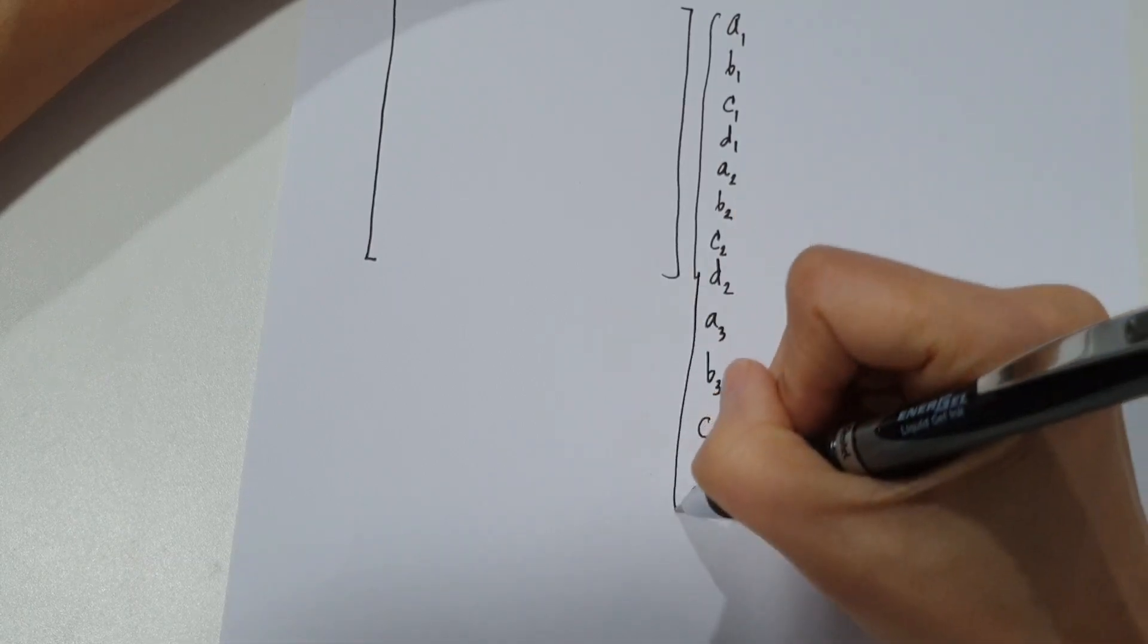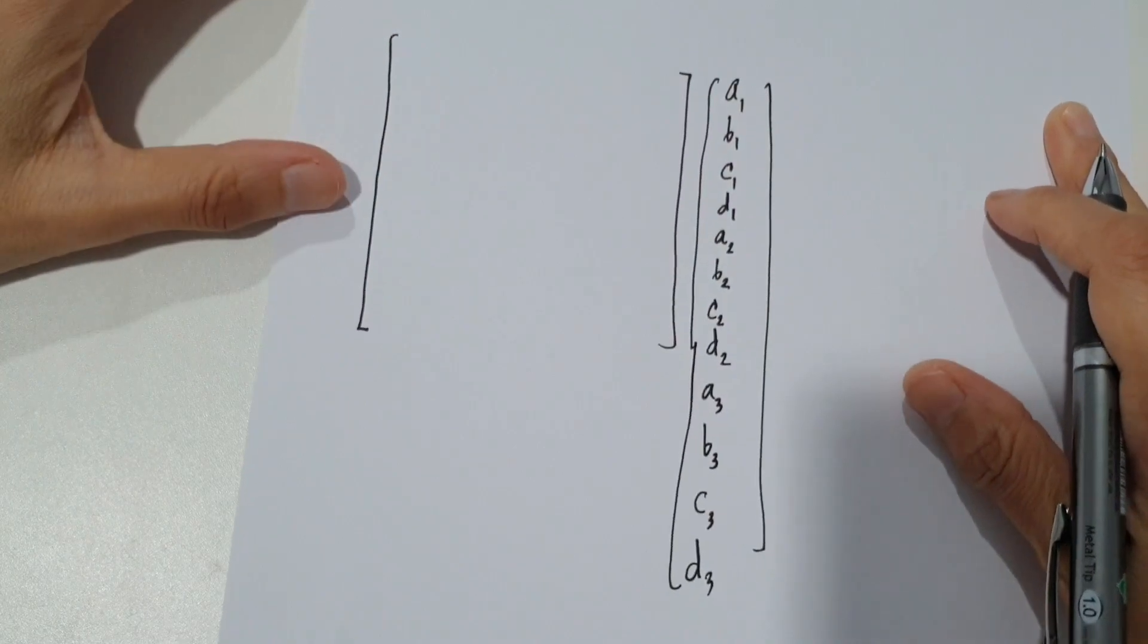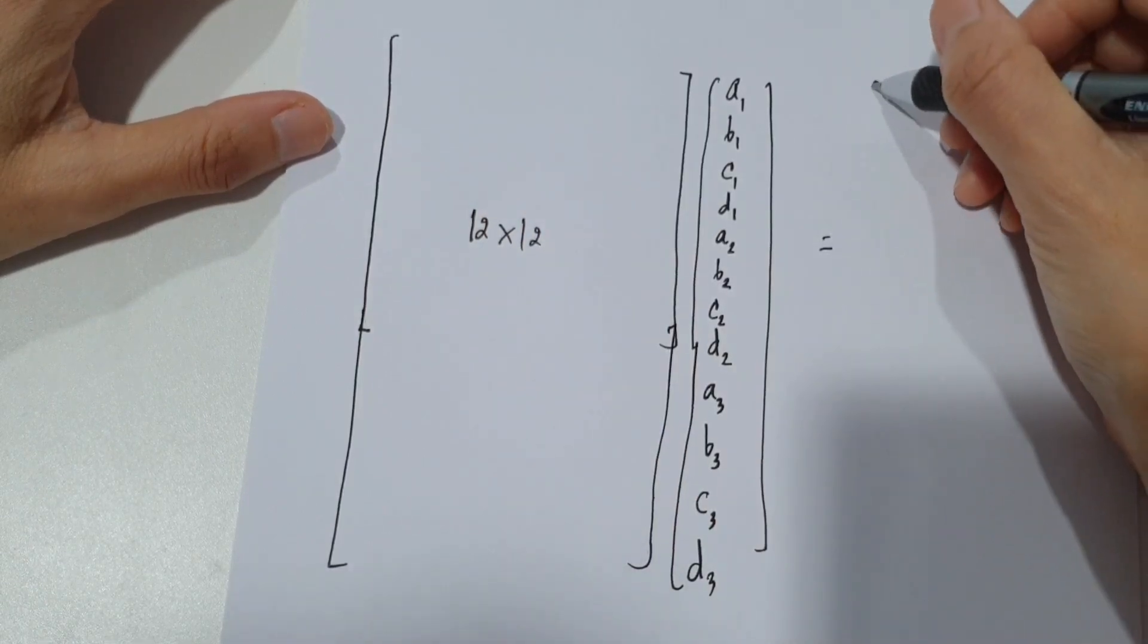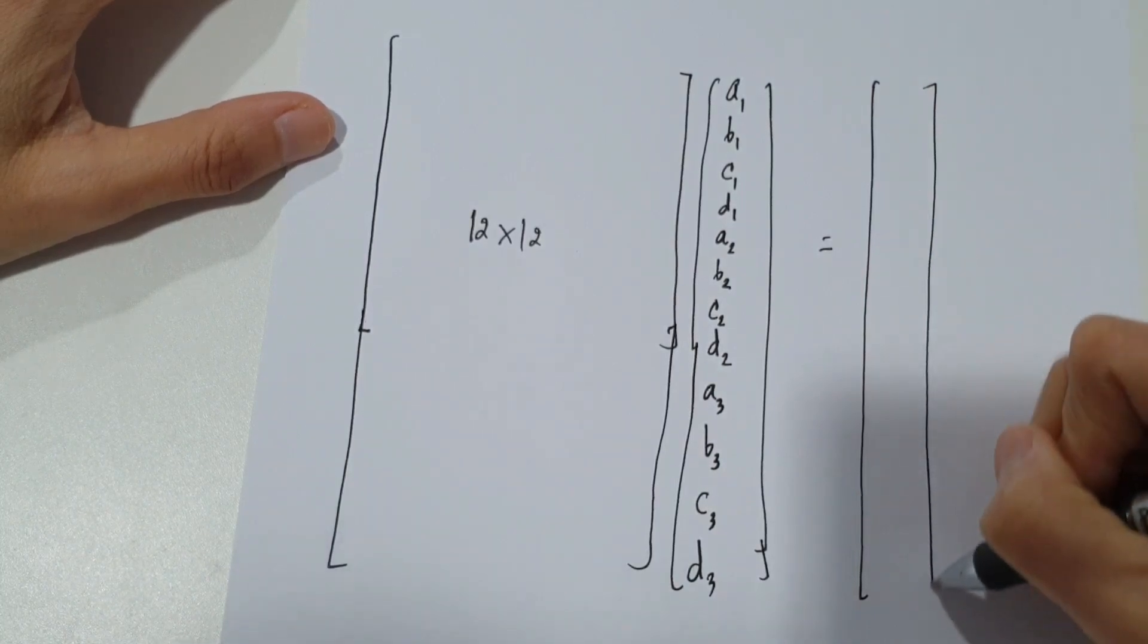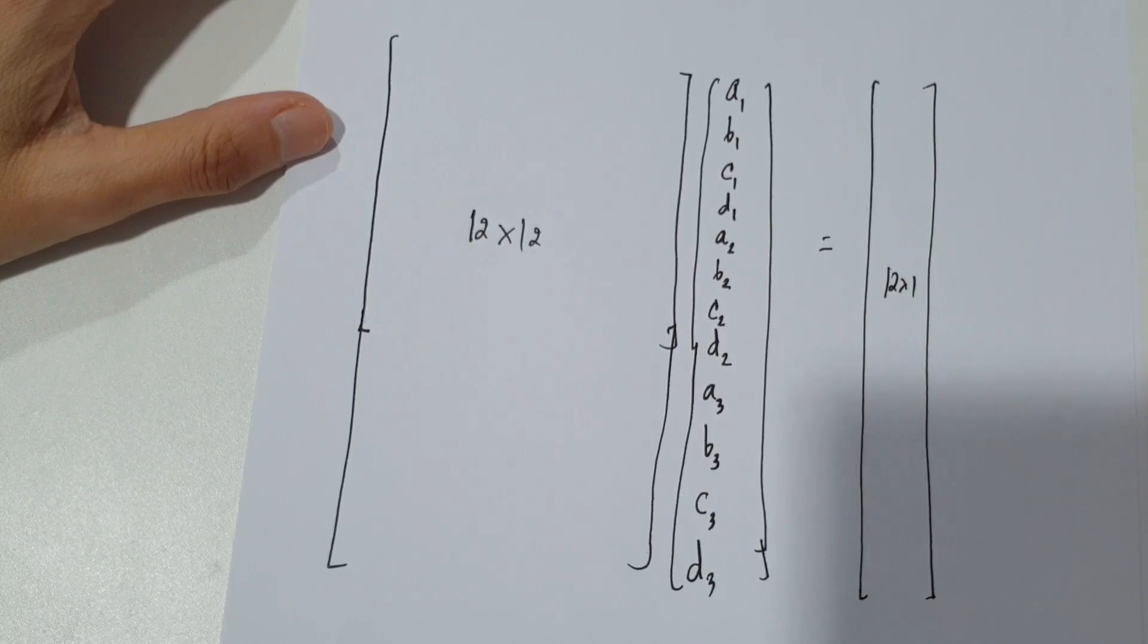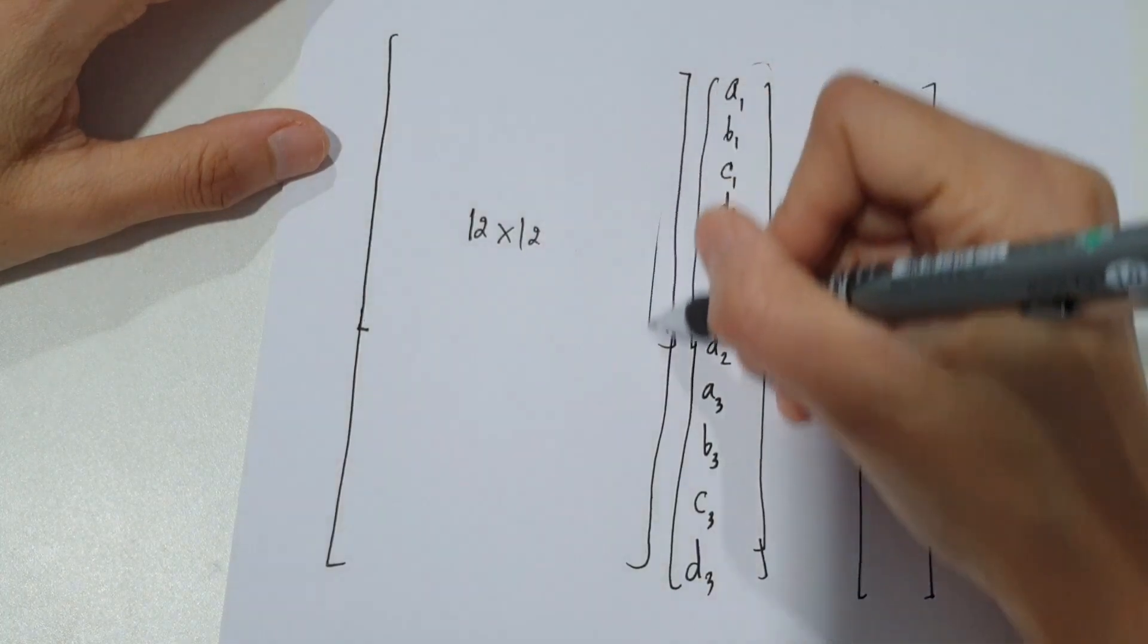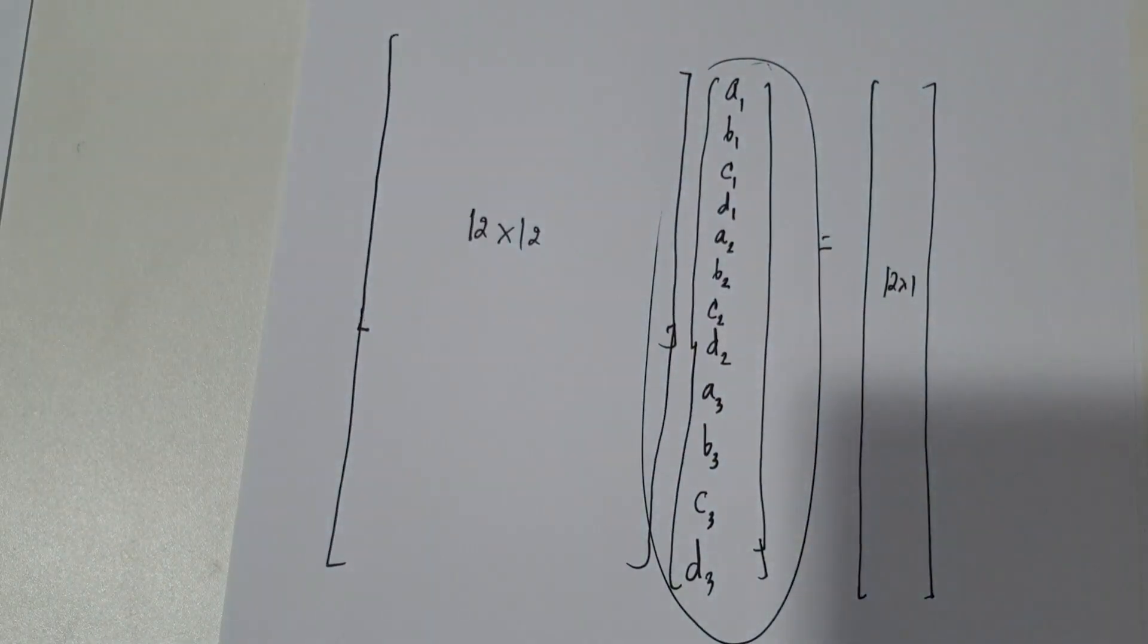So here is the equation that we're going to create. This is 12 by 12, and this is a function 12 by 1. We have to solve for all unknown parameters, for this vector. You can use the previous lecture where you learned how to solve system of equations to solve this big set of equations. This is the last part of this chapter, and the next chapter we're going to learn about regression techniques.